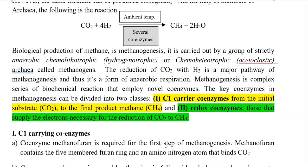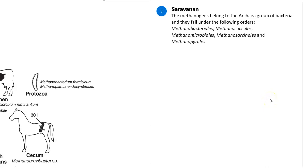The pathway in which methane is formed is referred to as the acetyl-CoA pathway. Methanogenesis comprises various biochemical reactions that employ different coenzymes. The key coenzymes are divided into two groups: C1 carrier coenzymes, which are involved in the initial steps of methanogenesis to carry the substrate carbon dioxide and ultimately form the product methane; and redox coenzymes, which supply the electrons required for reduction of carbon dioxide into methane.